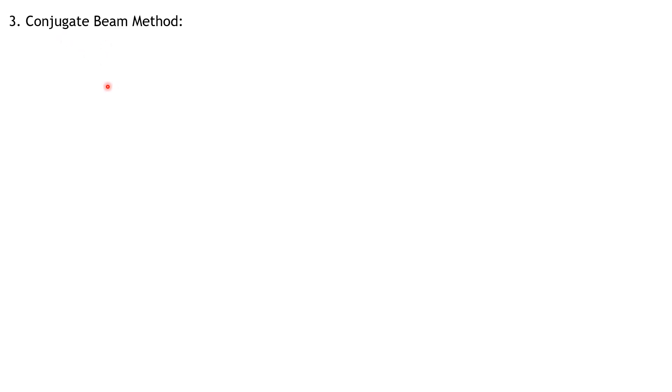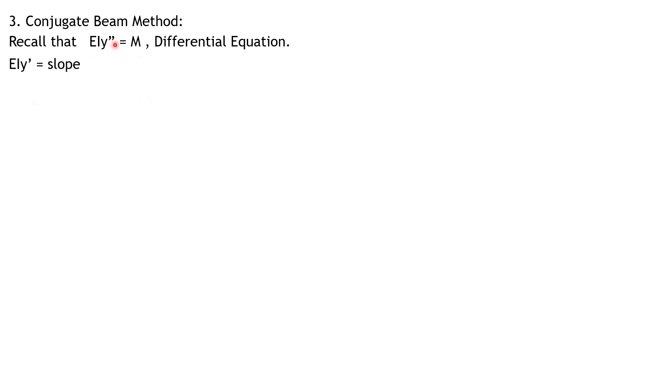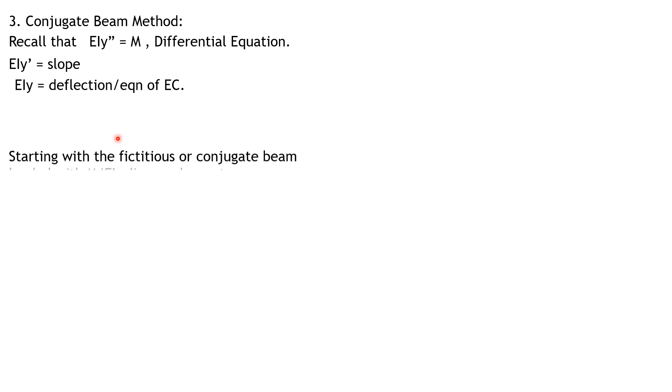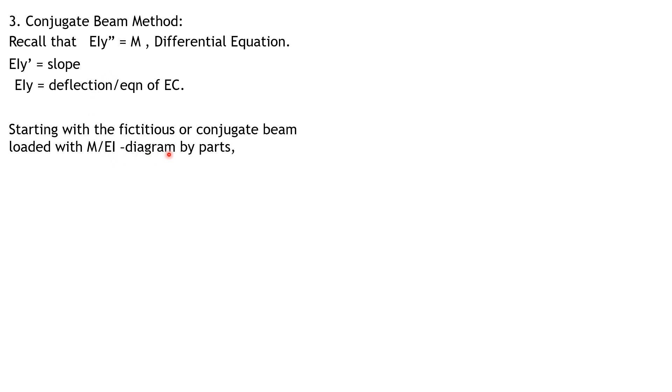This video discusses the derivation of the conjugate beam method, which is the easiest among the basic methods, especially compared to energy methods. We have the conjugate beam method where EIy double prime is the differential equation of the elastic curve, equal to M. Integrating once, EIy prime corresponds to the slope; integrating further, EIy is the equation of the elastic curve corresponding to the deflection at any point on the beam.